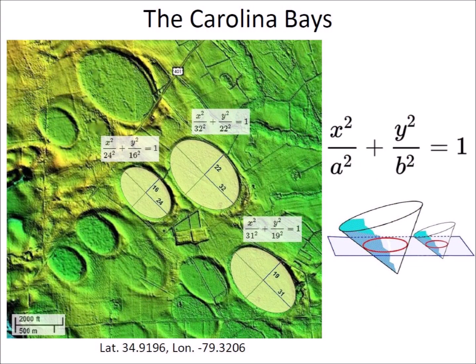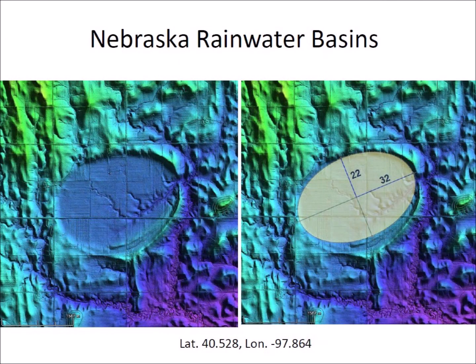The Glacier Ice Impact Hypothesis originated from the observation that well-preserved Carolina Bays are perfect ellipses. This is easy to verify using LiDAR images, a laser-ranging technology that eliminates the interference of vegetation and provides clearer images than those obtained by satellite or aerial views. Nebraska has similar elliptical features called rainwater basins that are oriented in a southwest direction instead of the southeast orientation of the Carolina Bays.